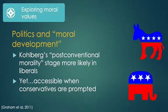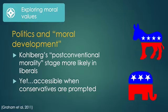Kohlberg's post-conventional morality stage was found to be more likely in liberals, suggesting principled conscience is either not a conservative phenomenon or this measure can't really tell us about it. When conservative students who typically got lower scores than liberals were asked to respond like a left-winger, their responses were at the level of left-wing students' responses at that higher stage.